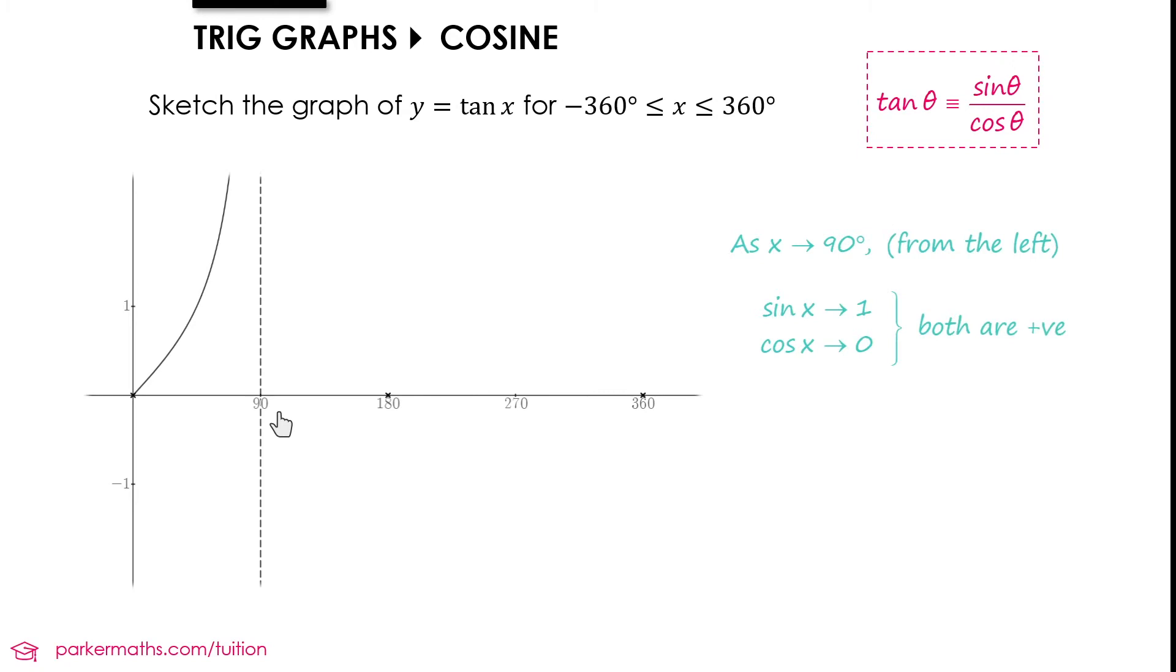What happens after 90? Let's think about approaching 90 from the other side. Sin x still approaches 1 and cos x still approaches 0, but the values just to the right of 90 degrees for cos are negative. We'll be doing 1 divided by a really small negative number, so tan x would be negative. We have a curve that starts very close to 90 with very large negative values, then comes up towards the axis crossing at 180 degrees.